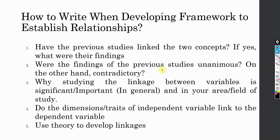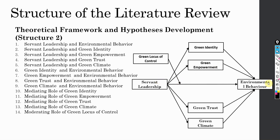Now, were the findings of the previous studies unanimous? If the previous research studies have linked the two concepts, were the findings unanimous? For example, you found three studies on the relationship between servant leadership and environmental behavior, and all three studies found a positive relationship between servant leadership and environmental behavior — so the findings are unanimous.